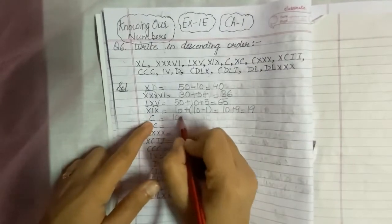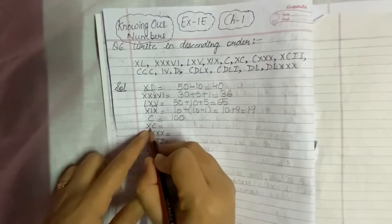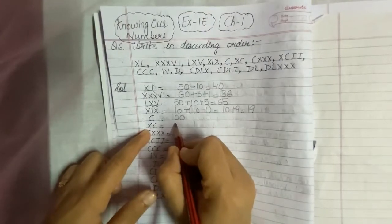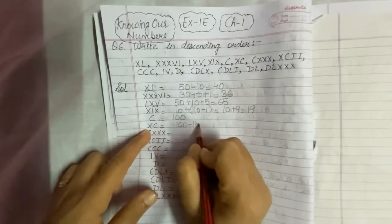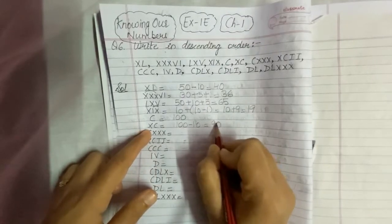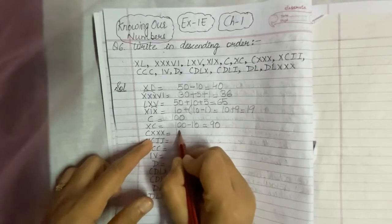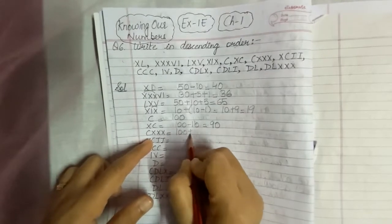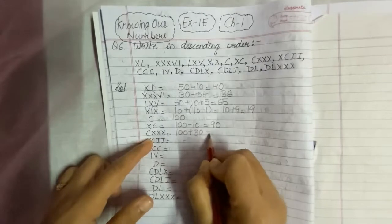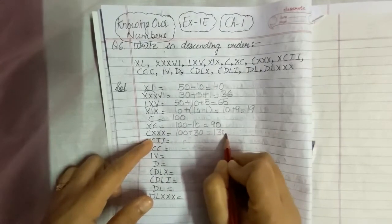Next is CXXX. C stands for 100, and XC means 100 minus 10 is 90 — wait, here C stands for 100 and XXX stands for 30. So 100 plus 30 gives us 130.